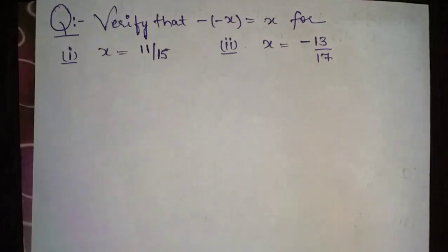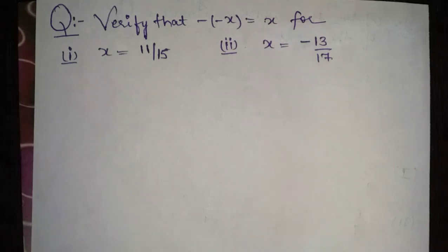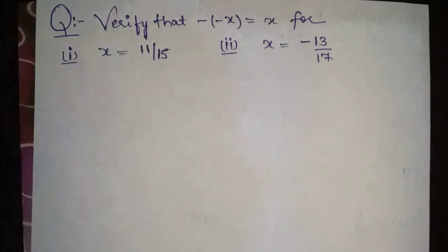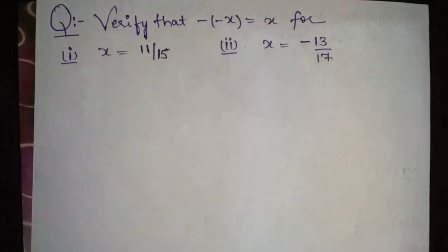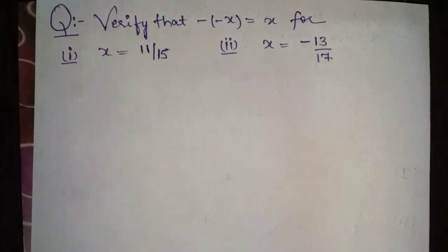Hello friends, welcome to our channel. Question number three is: verify that minus bracket open minus x bracket close is equal to x. Now it contains two parts. Number first part: x is equal to 1 by 15. And second part: x equals to minus 13 by 17.